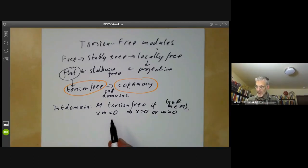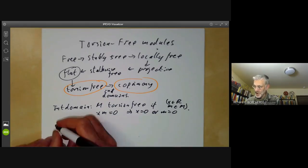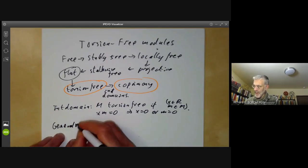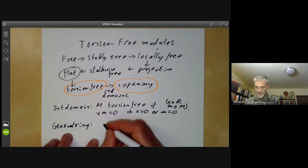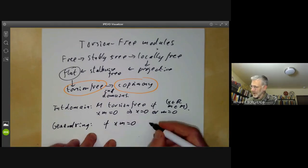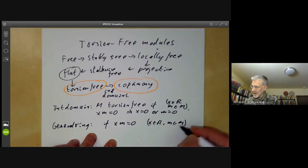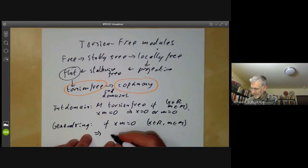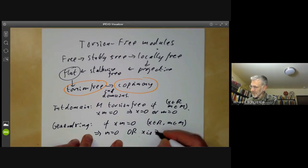Over a general ring, there are actually several slightly different definitions of torsion-free in the literature. One of them might be, for a general ring, if XM equals naught, where X is in R and M is in M, this implies M equals naught, or X is a zero divisor.